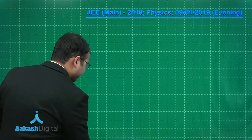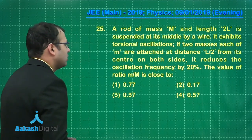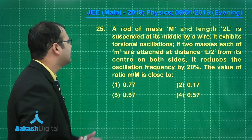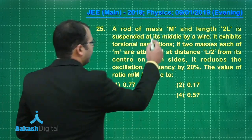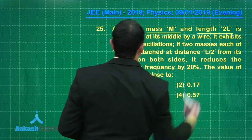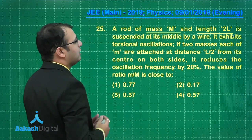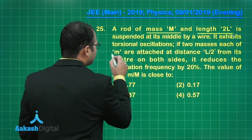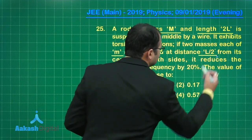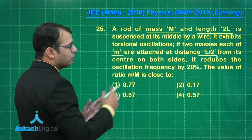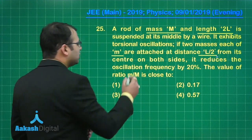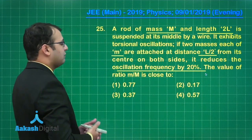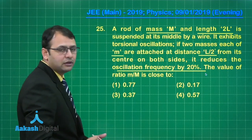Let's start with question number 25. This question belongs to the section on oscillations and waves. A rod of mass M and length L is suspended at its middle by a wire and exhibits torsional oscillations. If two masses each of mass m are attached at a distance L/2 from its center on both sides, it reduces the oscillation frequency by 20%. We have to find the value of the ratio small m to capital M.